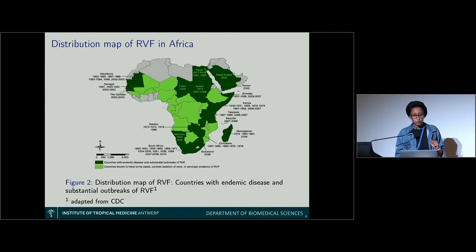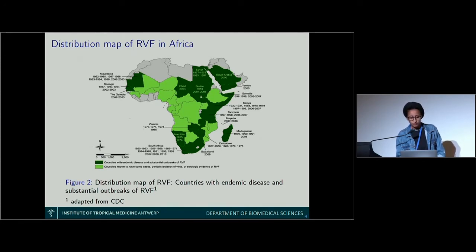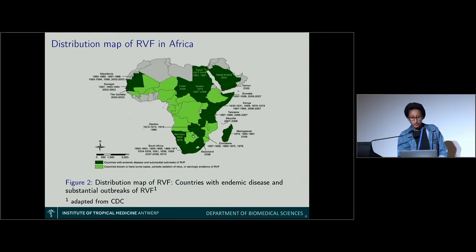This is the distribution map of Rift Valley Fever in Africa. The dark green countries have had substantial outbreaks, with the years of those outbreaks shown. The light green countries have only some cases. The virus was first found in Kenya in 1930, then spread through Eastern and Southern Africa. During the seventies it spread into Egypt, Western Africa, and also the Arabian Peninsula, including Saudi Arabia and Yemen.